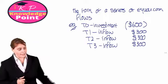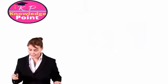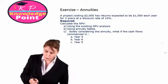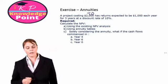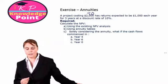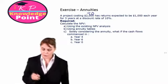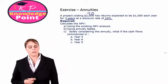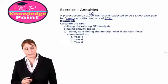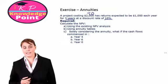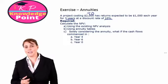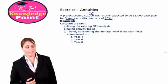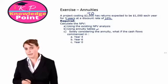So let's have an exercise to see how we deal with annuities. We are told that a project costing $2,000 — a cash outflow in T0 — has returns expected to be $1,000 each year for three years, where our discount rate is 10%. We want to calculate the net present value, first using our existing NPV analysis, and then using annuity tables.